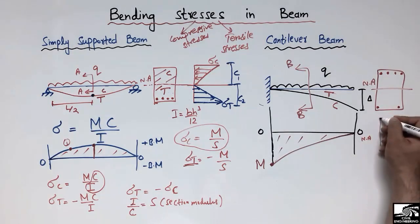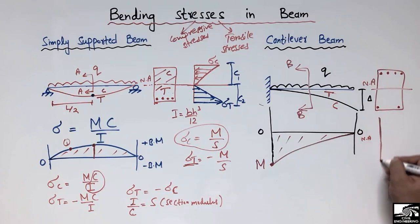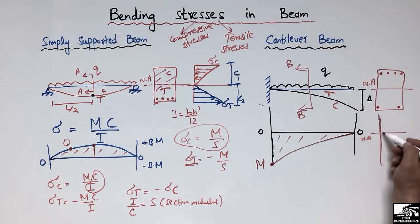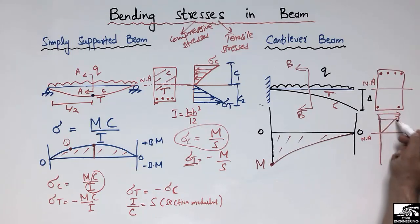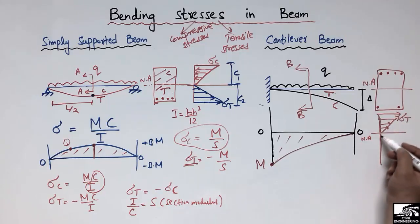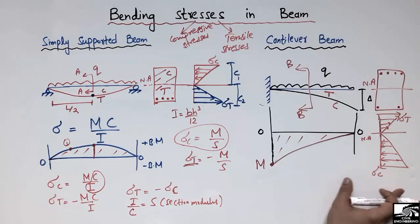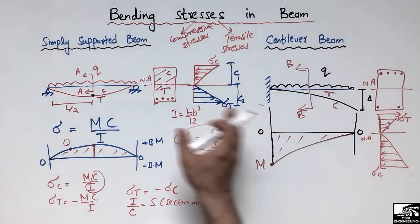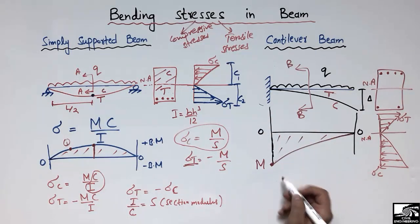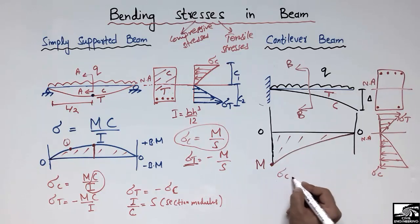In the cantilever beam cross-section, we represent the tension at the top as σ_T and the compression at the bottom as σ_C. The behavior of the cantilever beam is quite opposite to that of the simply supported beam.